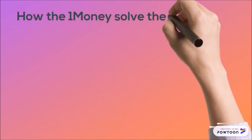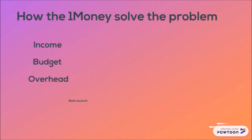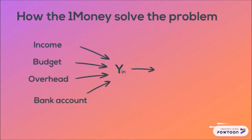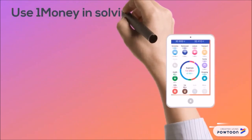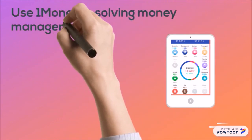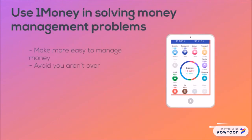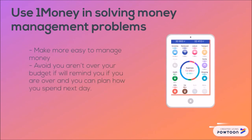1Money solves the problem by taking inputs which are income, budget, overhead and bank account. Through the activation function, 1Money will generate the output which displays your overhead compared with your budget and reminds you when your overhead is over budget. Using 1Money makes it easier to manage your money and ensures you are not over budget. It will remind you if you overspend so you can plan how you spend the next day.